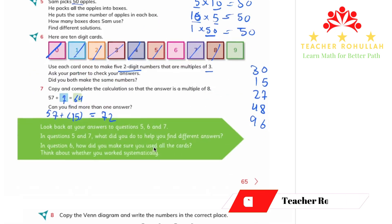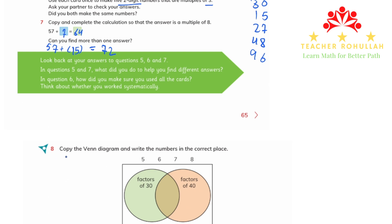Question 8 says copy the Venn diagram and write the numbers in the correct place. The diagram has factors of 30 and factors of 40. The number 5 is a factor of both, since 5 times 6 is 30 and 5 times 8 is 40, so 5 goes in the middle. The number 6 is only a factor of 30, and 8 is only a factor of 40. The number 7 is not a factor of either, so it goes outside the circles.